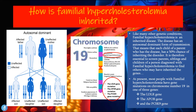Familial hypercholesterolemia is an inherited disease with an autosomal dominant form of transmission. This means that each child of a parent who has the disease has a 50% chance of inheriting the disorder. It is therefore essential to screen parents, siblings and children of a person diagnosed with familial hypercholesterolemia to find others who may have inherited the bad genes.